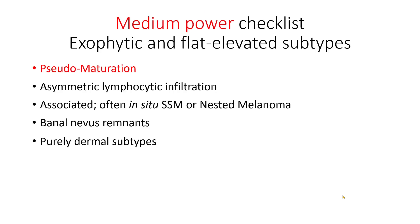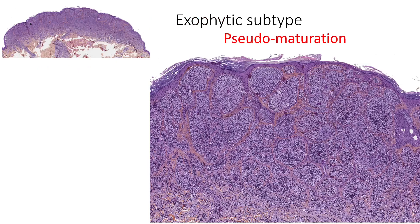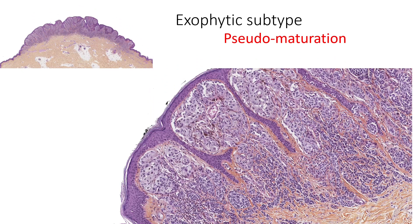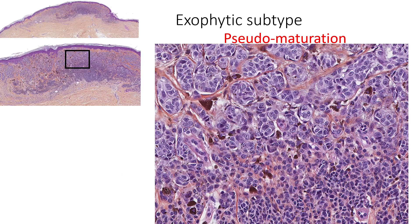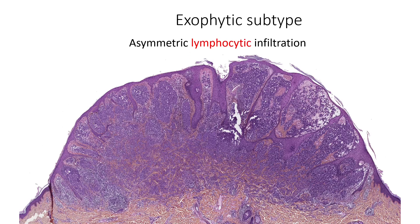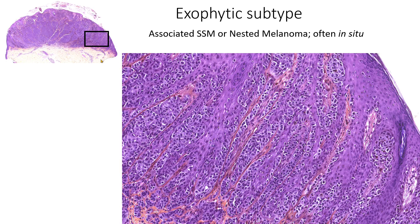Now moving to the medium power checklist, which is common for both exophytic and flat elevated subtypes. Most important is pseudomaturation, meaning there is a diminution in size of cells and nests from top to bottom, which resembles what we can see in most nevi. Some lesions are purely dermal and can have focal lymphocytic infiltration. We can find an association with superficial spreading melanoma or in situ nested melanoma, often on one side of the tumor.